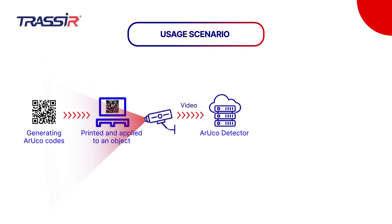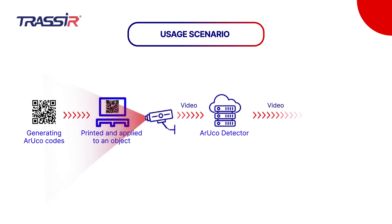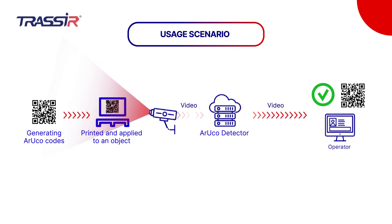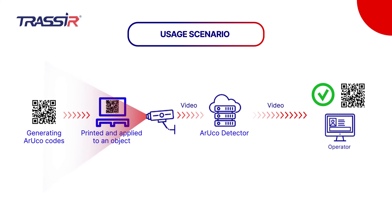After that, the received data about the detected number are shown in the fancy log — a function combining an event log, search, a unified vertical timeline for archive and events on all channels, and tabs search. Further, the information about Aruko detection is passed into scripts and can be used according to scenarios.